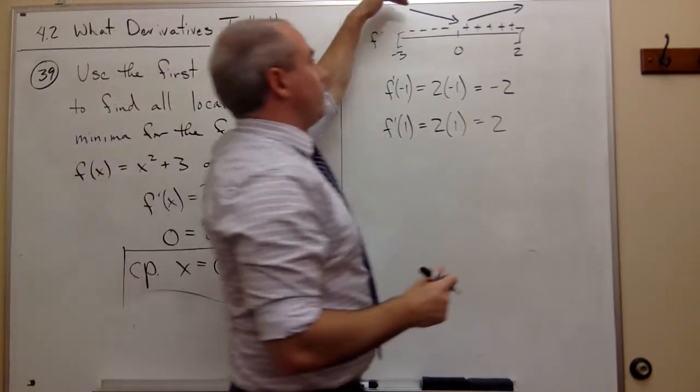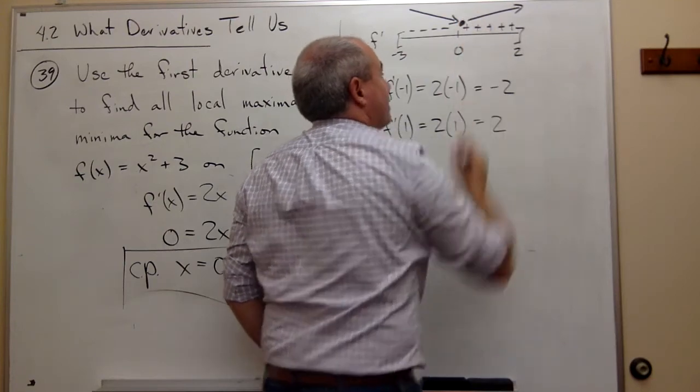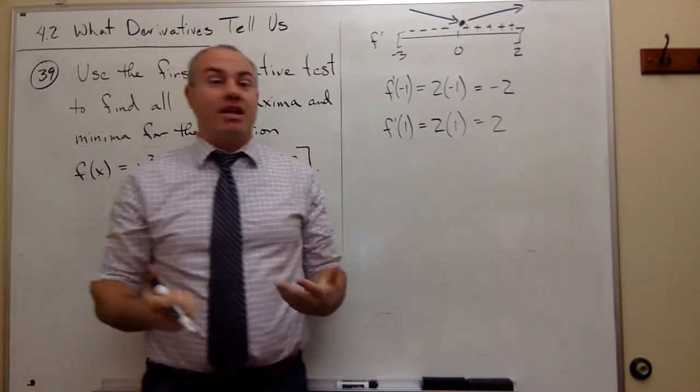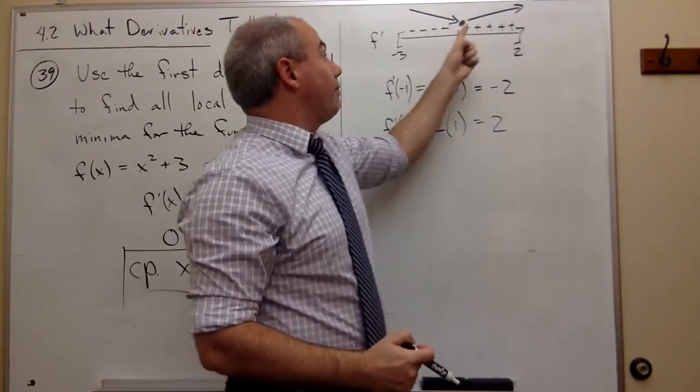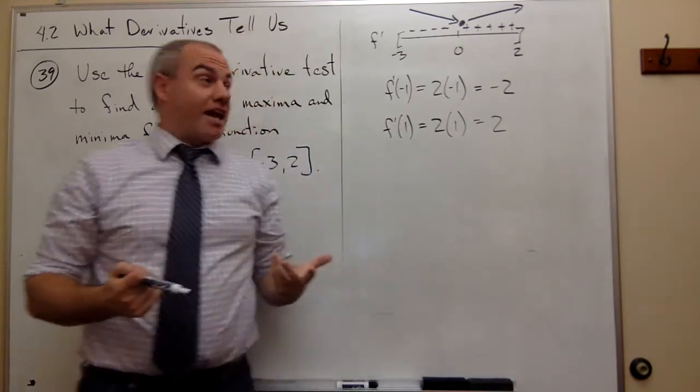You can see, if it's going down and then going up, what must happen at this point? Is it a maximum or minimum? Well, if you're going down and then going up, this must be a minimum. That is what's happening here.